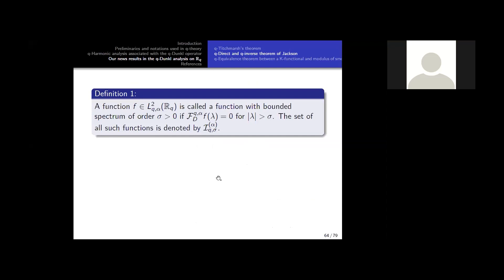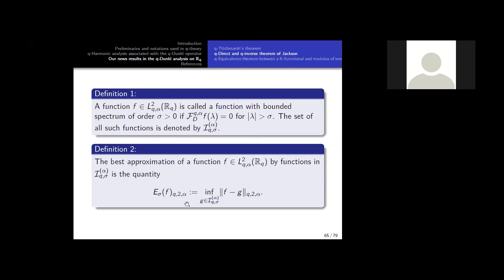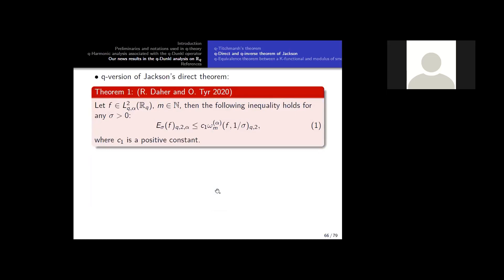And we need this for approximation theory. So we call the function band-limited. We find the analog of order sigma. This is the same thing that we define classically. Some of you have also some different analogs of the definition of this approximation. And so we have. Now, in this definition, we obtain some Q-version of Jackson's direct theorem.